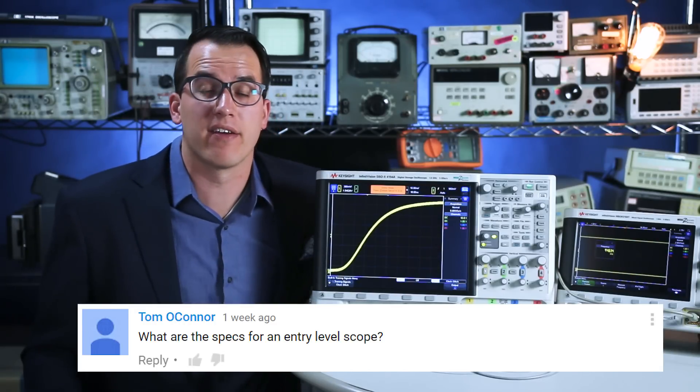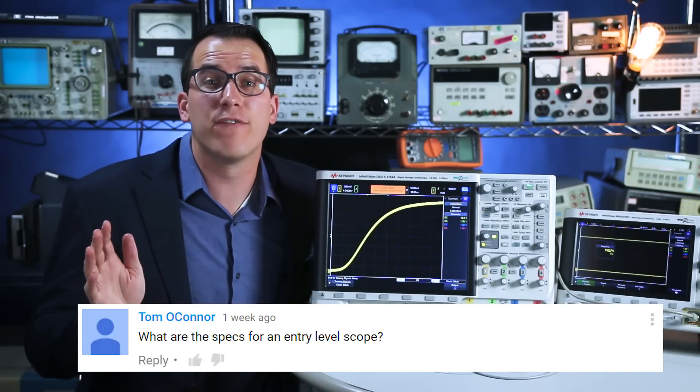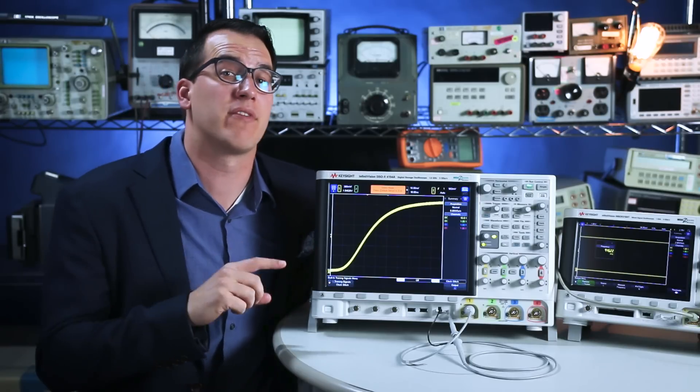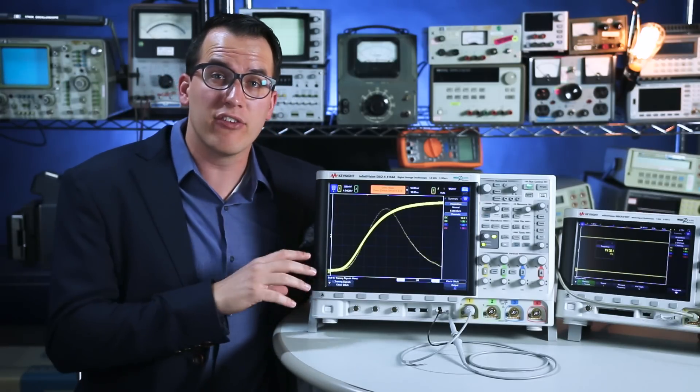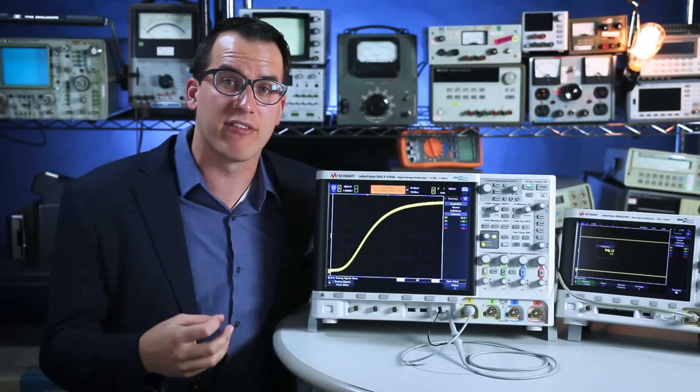I'm doing this video because in a previous episode I was asked to cover some basic oscilloscope specs. Waveform update rate is a crucial spec that you have to understand on your scope and essentially it describes how fast your scope is able to acquire and display signals.